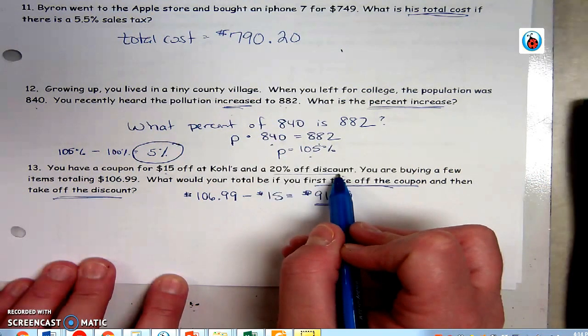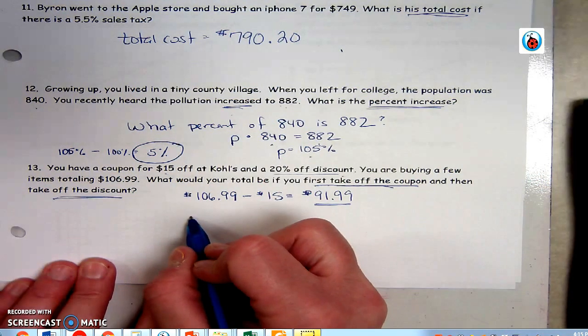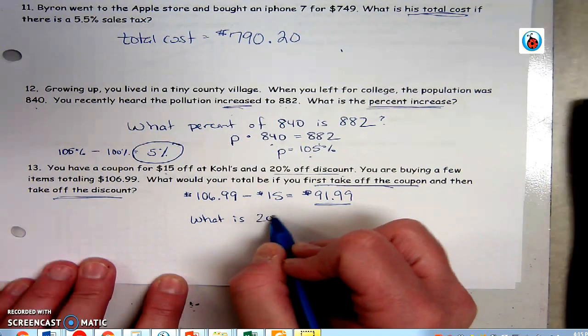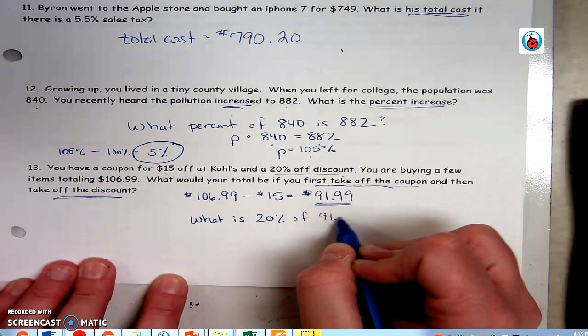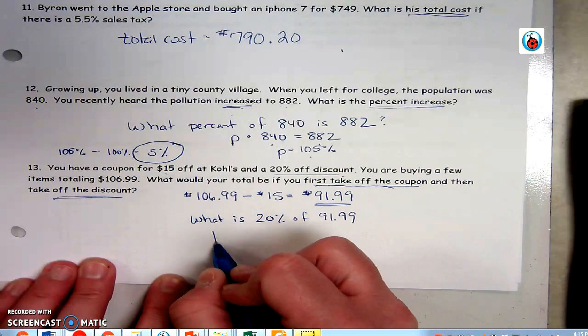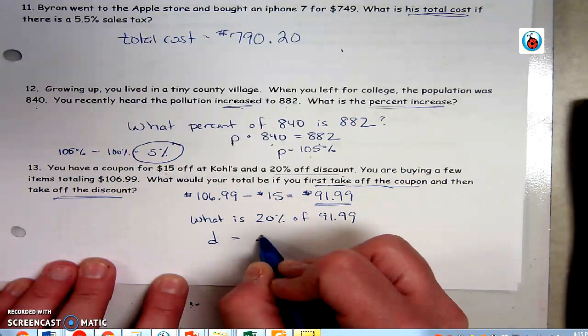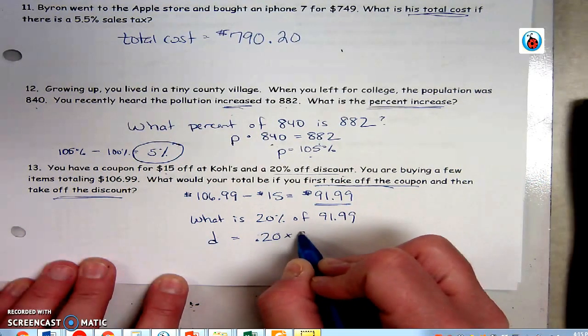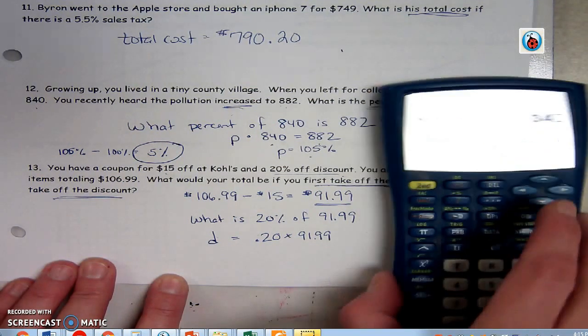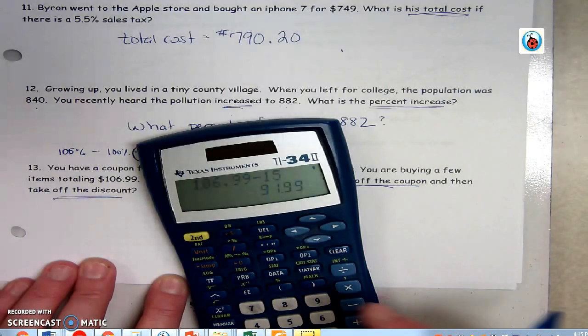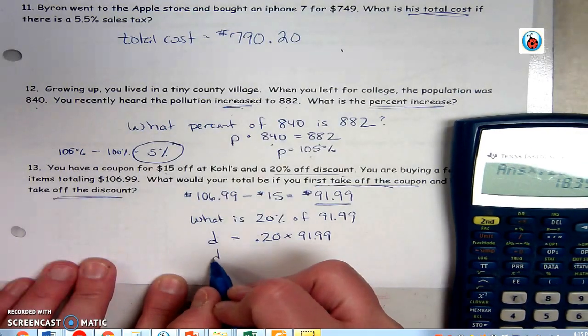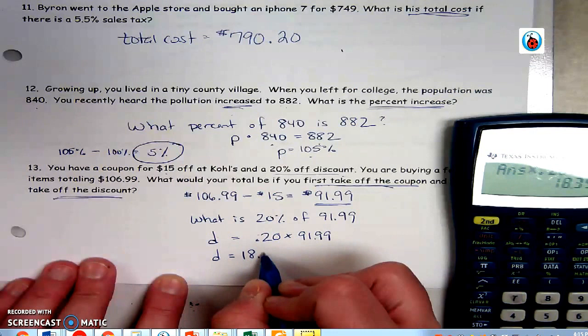Now I need to take off the 20 percent discount. So I'm going to say, what is 20 percent of $91.99? The discount is 20 percent of $91.99. So I'm going to multiply 20 percent by this. I'm going to multiply, still in my calculator from before, I left it there, I didn't clear it, times 0.20. So the discount, the 20 percent, is $18.398.